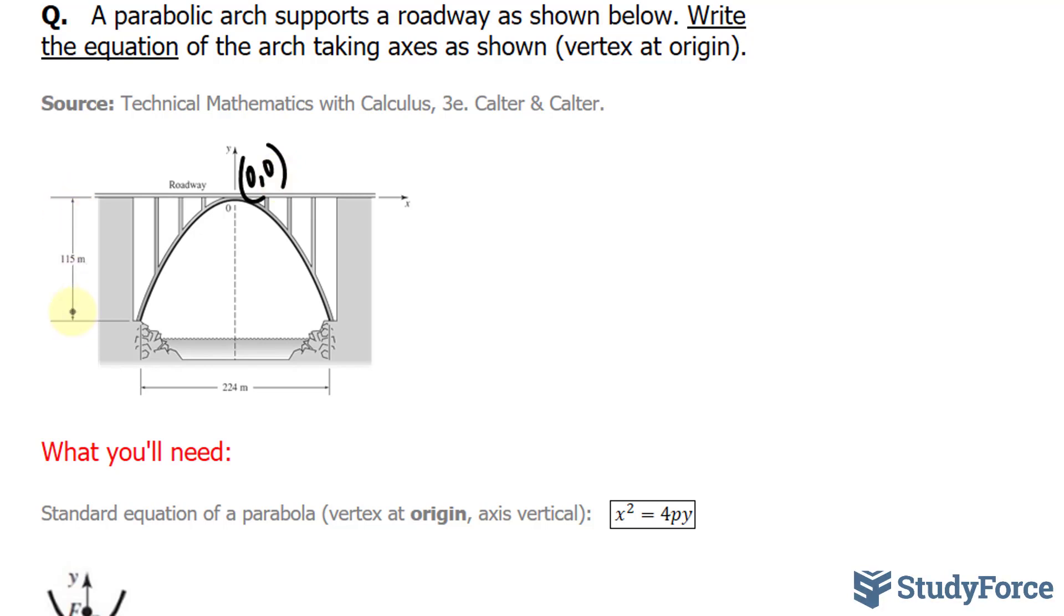The parabola is also 224 meters wide, and that's shown from here to here. If we divide 224 by 2, we end up with 112 on the right side and 112 on the left side.